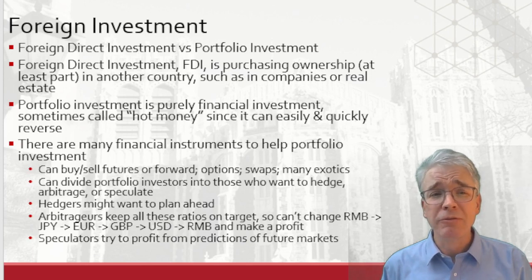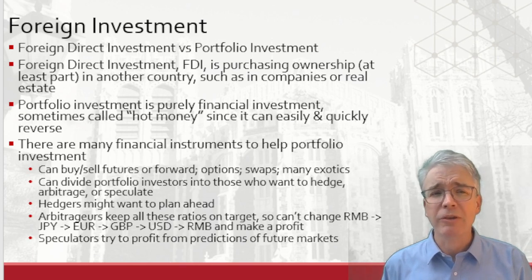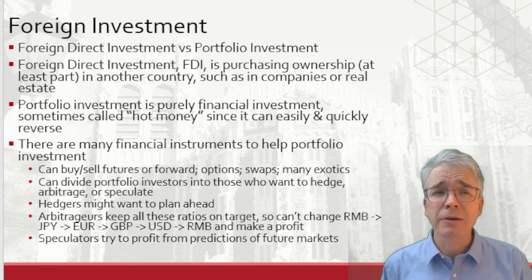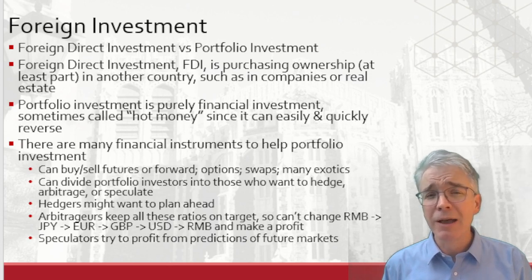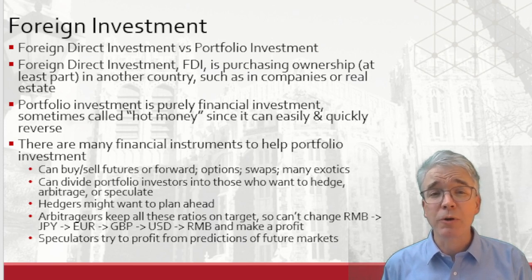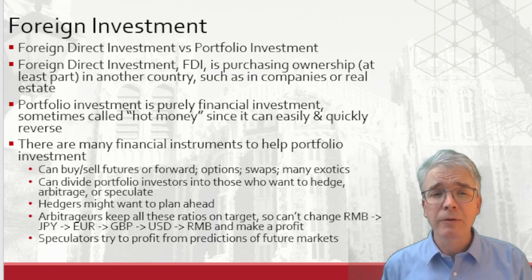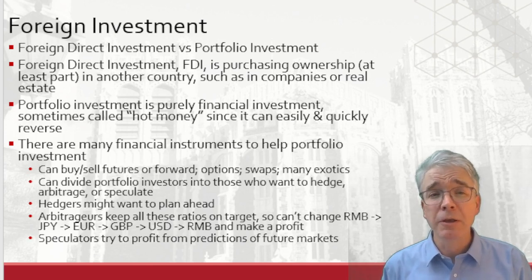For foreign direct investment we can distinguish at least two principal types: foreign direct investment versus portfolio investment. FDI is purchasing ownership — at least in part — in a company in another country, with an aim to create a new organization or expand. Portfolio investment is purely financial — sometimes called hot money — because it can easily and quickly reverse. Someone who buys 100 shares in a foreign company can sell them later the same day, whereas FDI is much less liquid. If you've entered a joint venture or bought a factory, you can't exit that the same day.